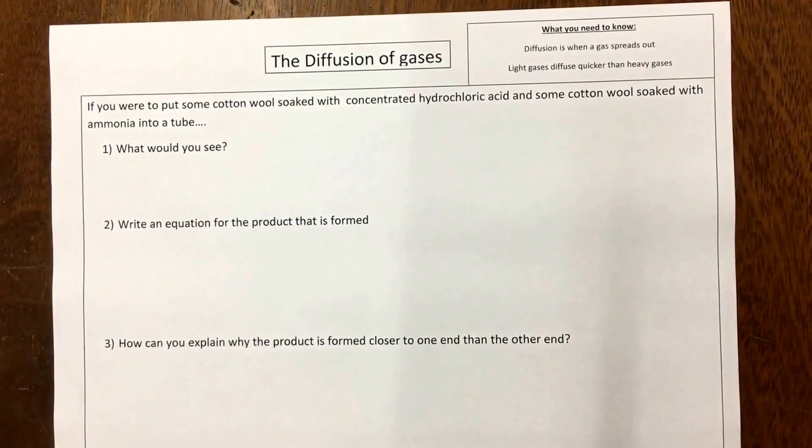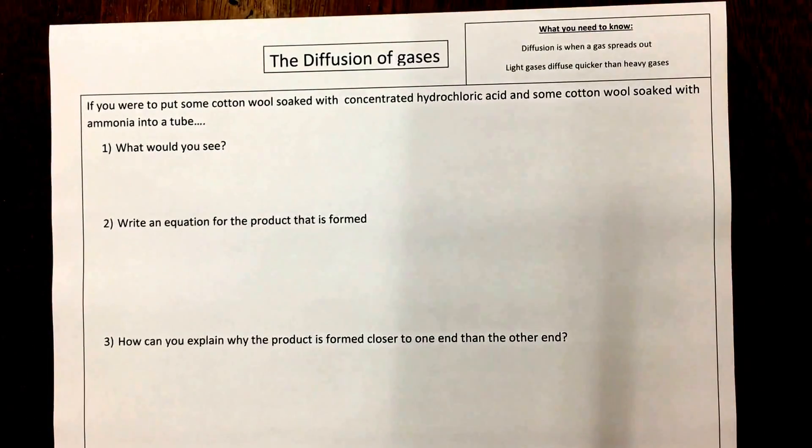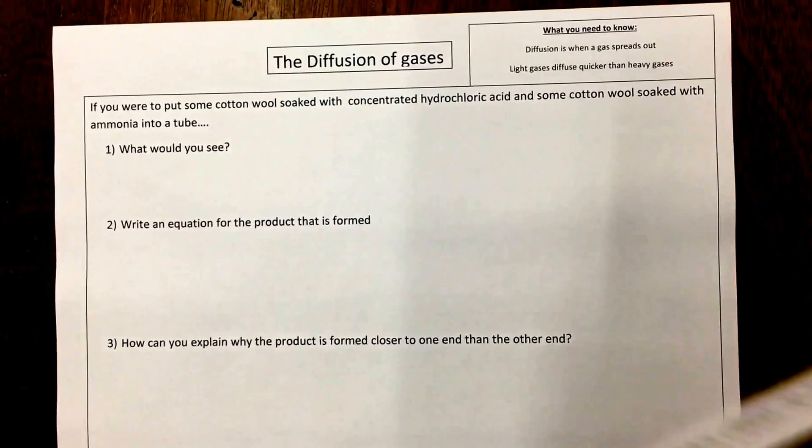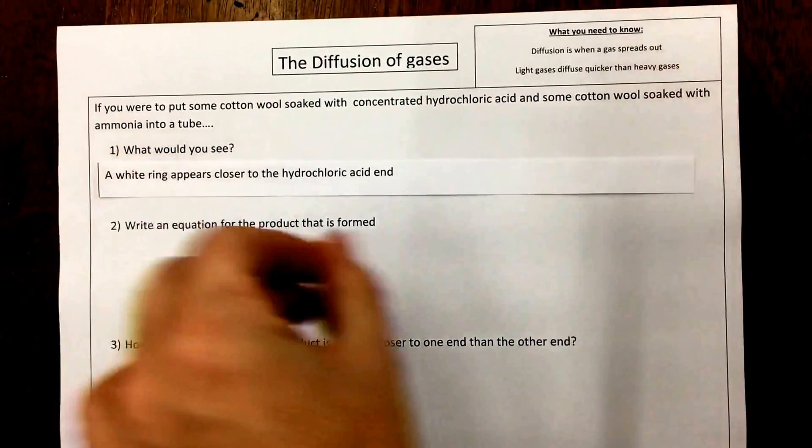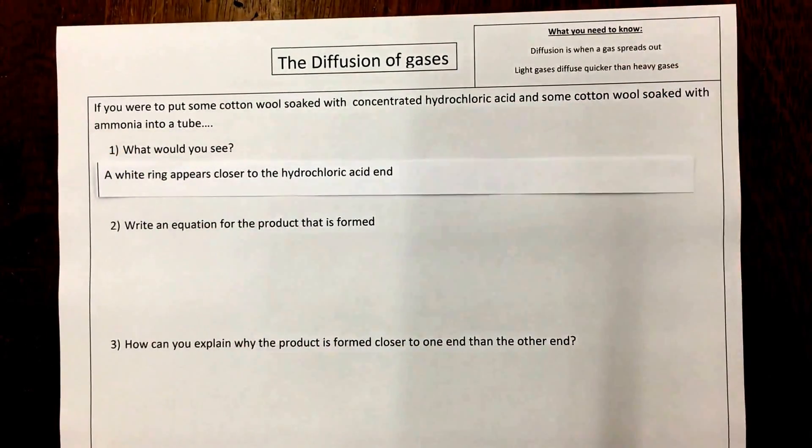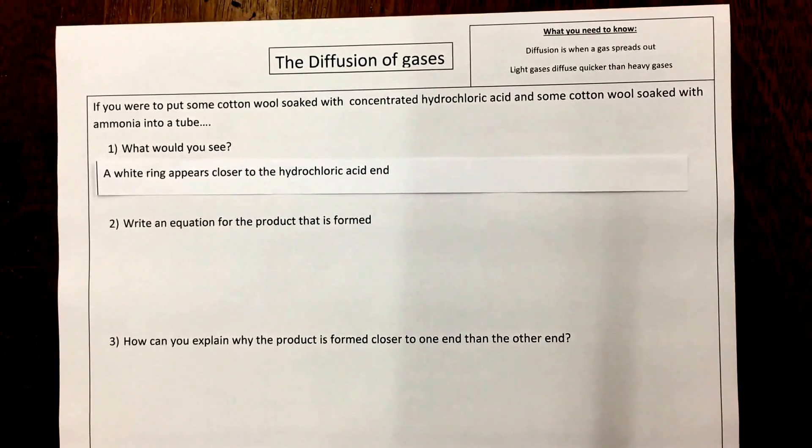Now we've done the practical, we're in a position to answer the questions. So the question says what would you see? Well we found that a white ring appears closer to the hydrochloric acid end. We know that the product we get is ammonium chloride.